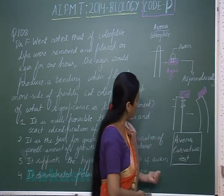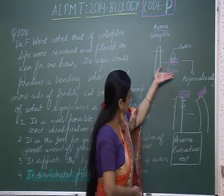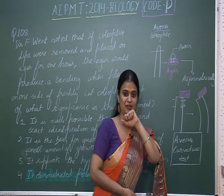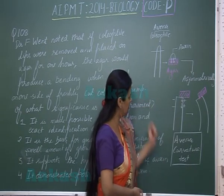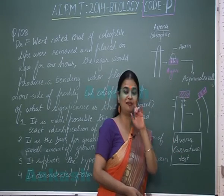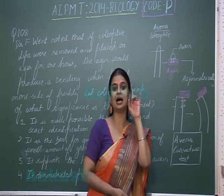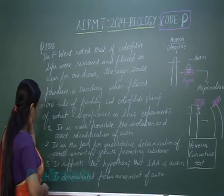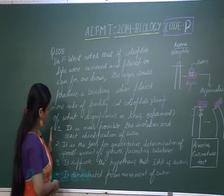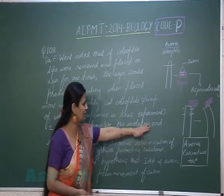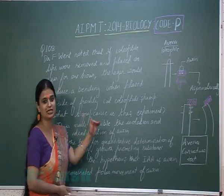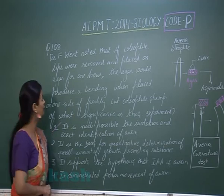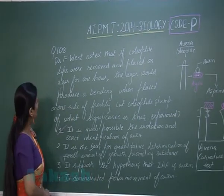Along with that, this experiment helped in the extraction of auxin in the agar block. So the two main significances are: one is the isolation of auxin in agar block, and the second is that the Avena curvature test tells the identity of the hormone. The right option is that it made possible the isolation and exact identification of the hormone — option number one is the correct answer for question 108.